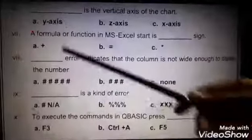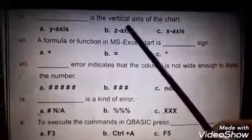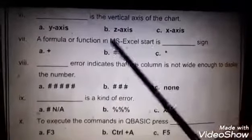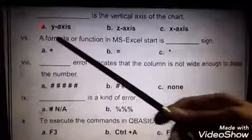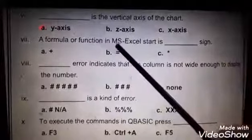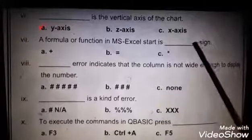Number 6: Dash is the vertical axis of the chart. Jo vertical axis hote hain use hum kya kehte hain? Right answer is A, y-axis. Number 7: A formula or function in MS-Excel starts is dash sign. A: plus, B: equal, C: star.